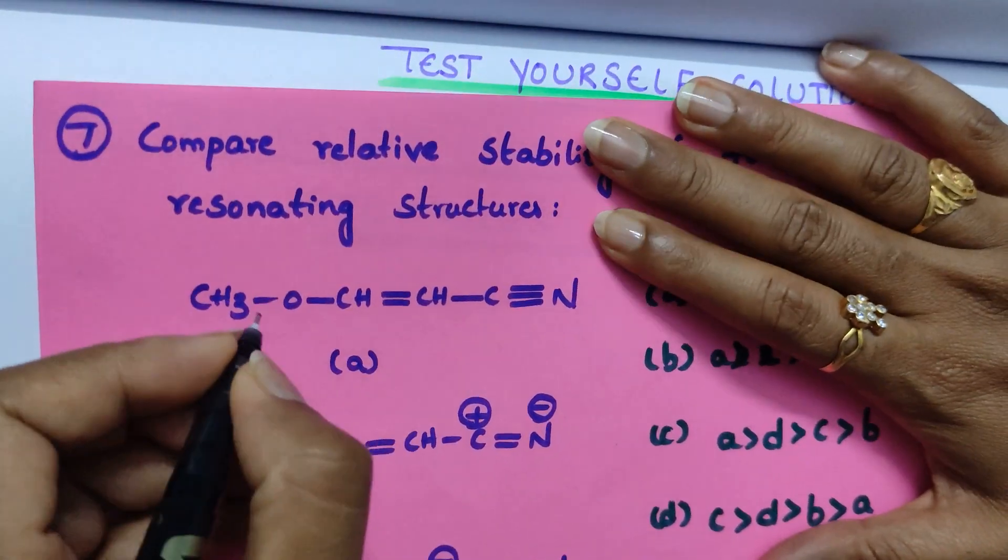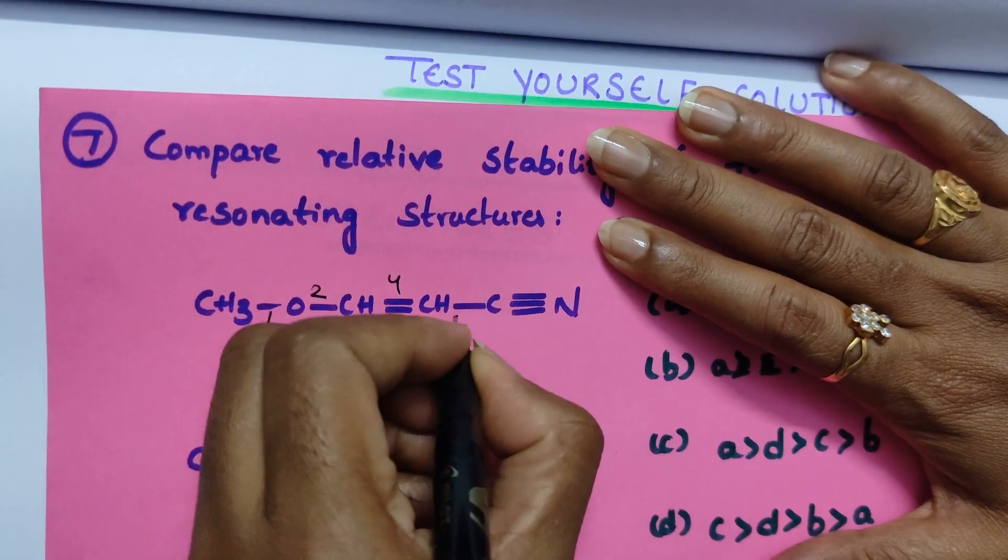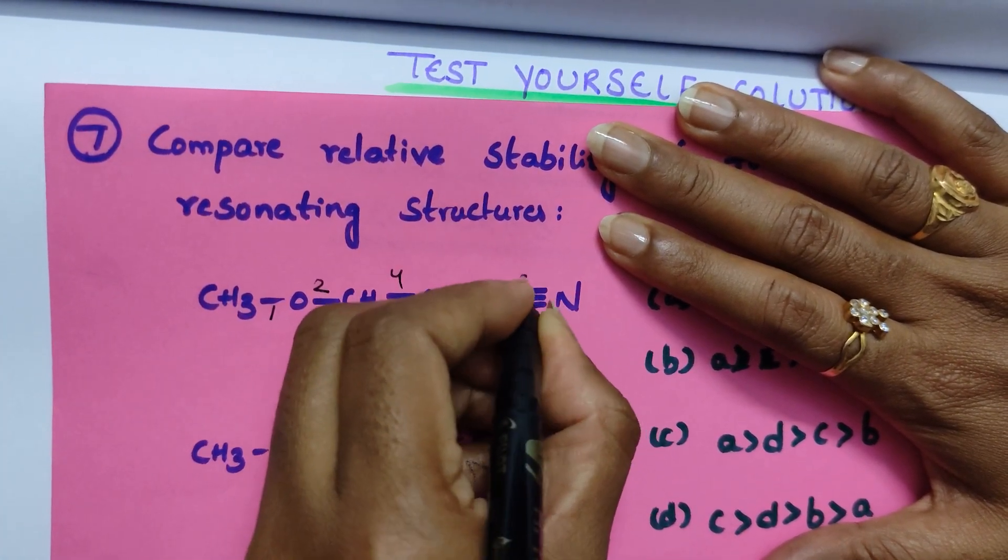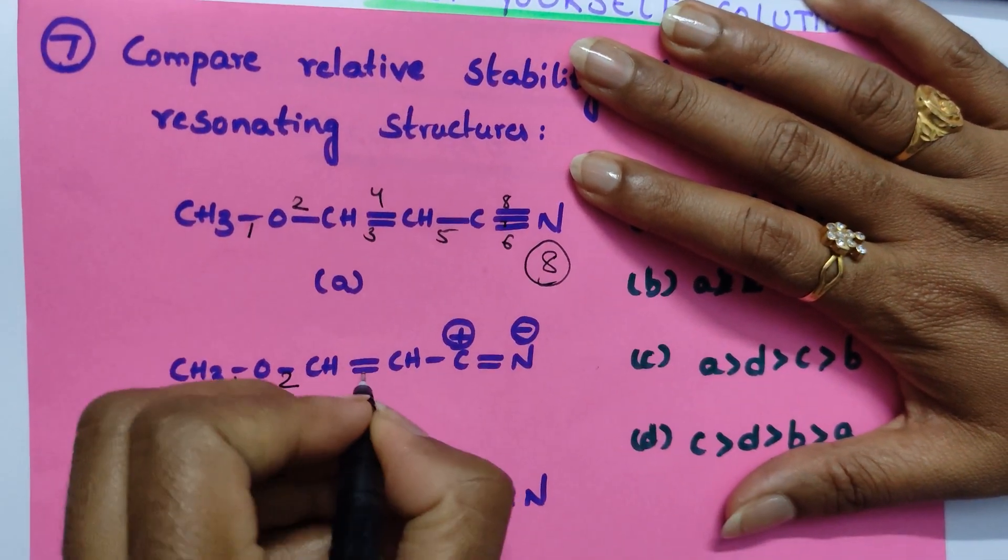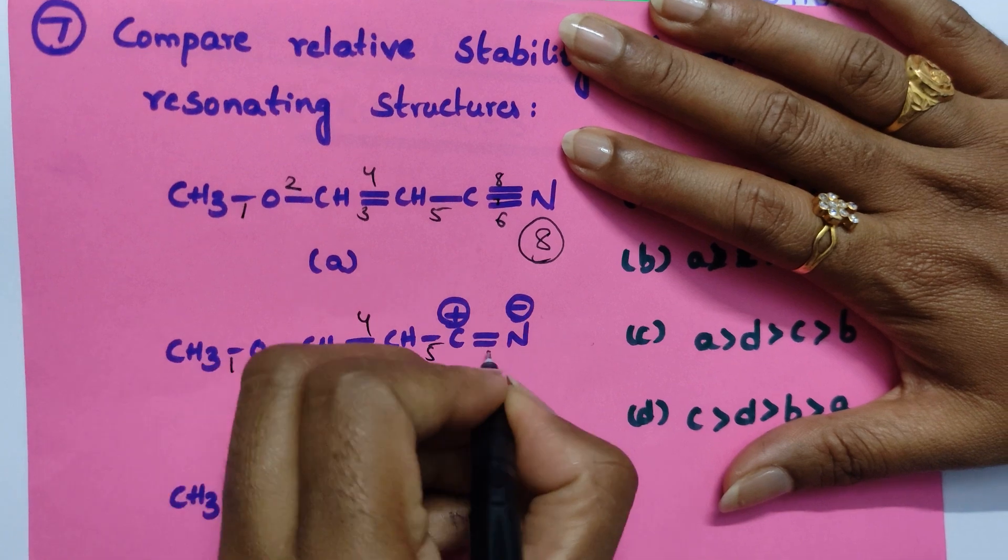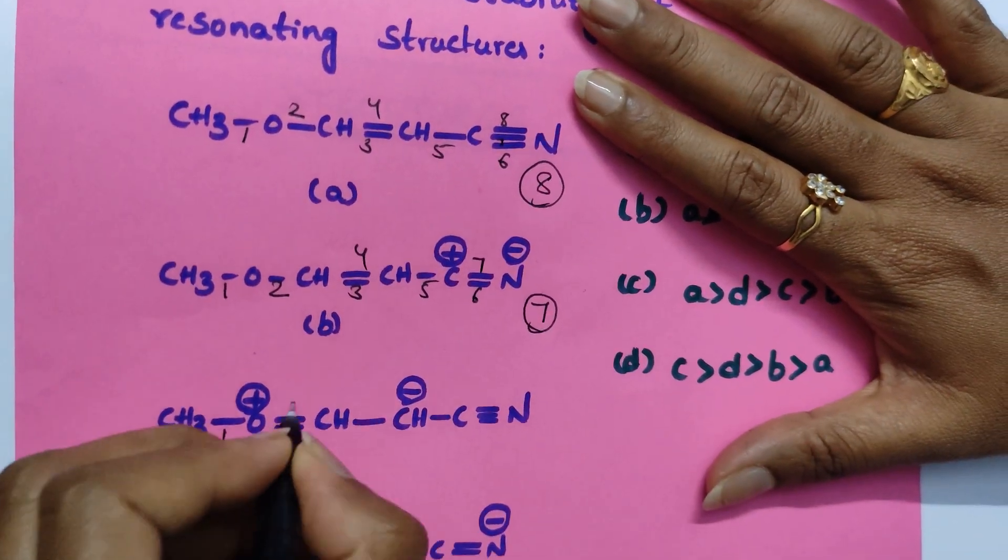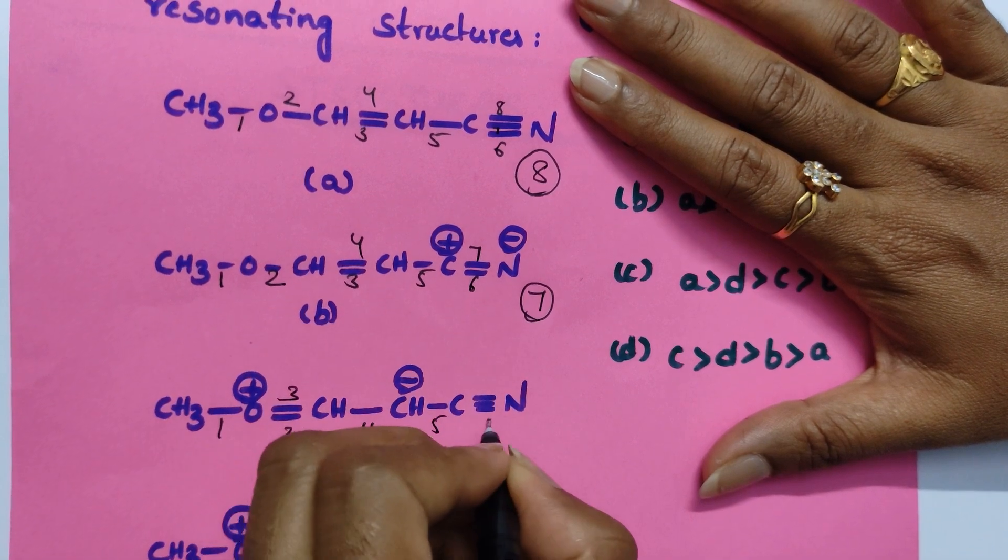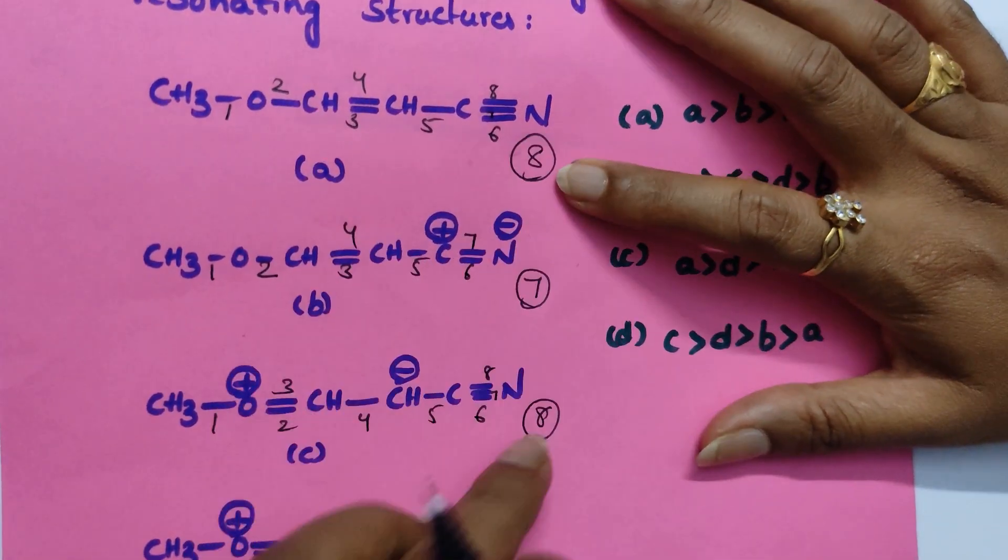First you have to count the sigma covalent bonds. Both sigma and pi, both you should count. Counting the first structure: 1, 2, 3, 4, 5, 6, 7, 8. Eight covalent bonds. Here: 1, 2, 3, 4, 5, 6, 7. Seven bonds. Next: 1, 2, 3, 4, 5, 6, 7, 8. Oh here also 8 there.